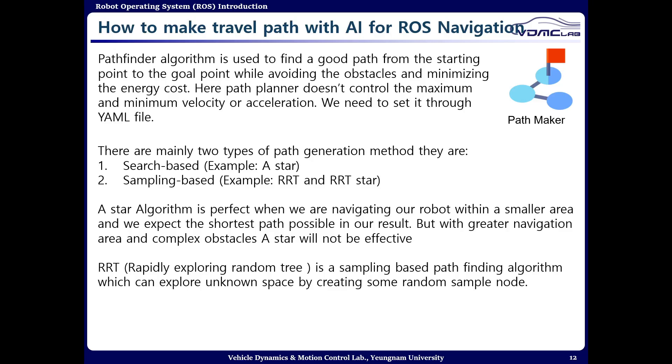Now as we know the location of the robot, which will be our starting point, and of course we will have a goal point, we have to make a safe path in between. Also we have to set the maximum and minimum velocity and acceleration of the robot to be following the path. For path generation there are two types of algorithms, one of which is search-based, preferred for a small area maybe like a room.